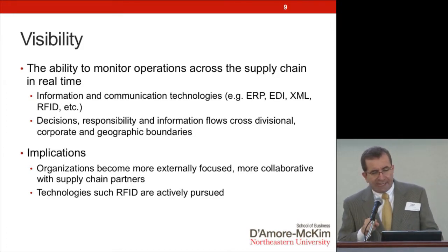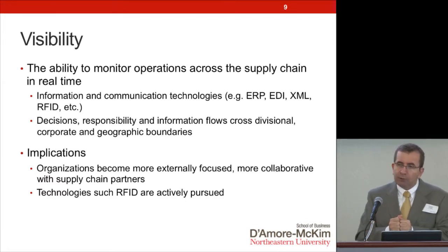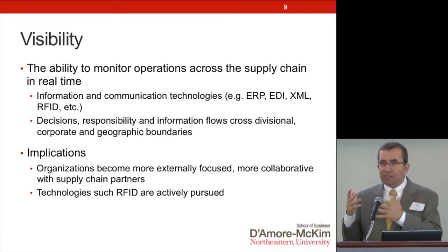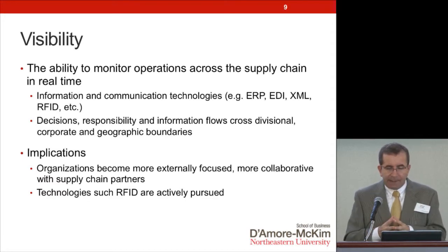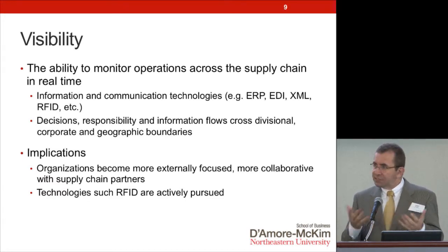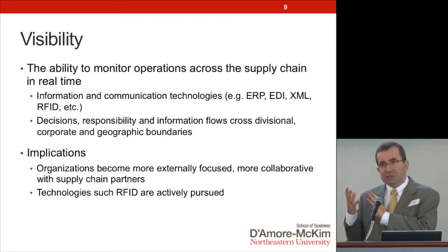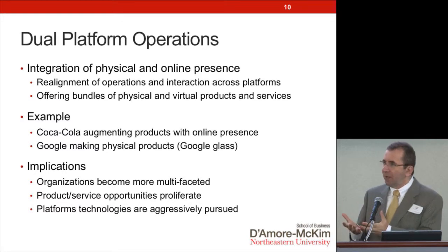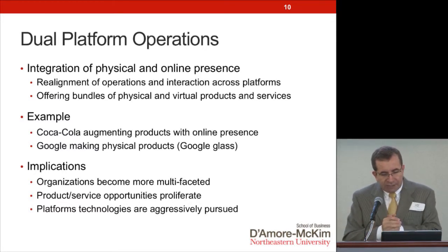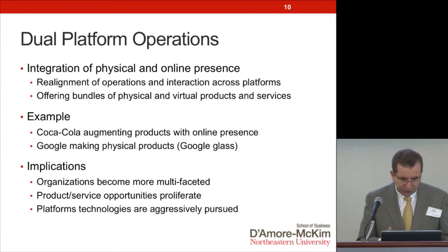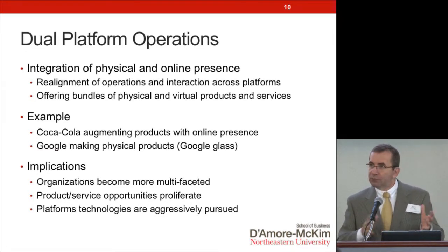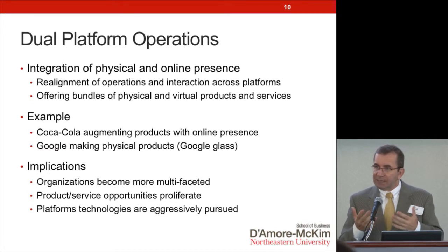Another affordance is that many companies now operate at both the physical market level and the online realm. For example, companies like Coca-Cola, which make physical products, also have an online presence. And companies like Google, which have traditionally been internet-only companies, are now getting into physical products like Google Glass. Both paradigms are coming together and merging, and soon there will be little difference between manufacturing companies and internet companies.